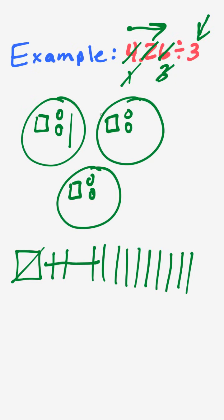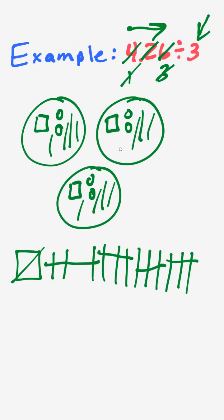Distributing tenths in sets of three: here's three — one, two, three — here are another three — one, two, three — here is another set of three — one, two, three — and just keep doing this until they're all used up. And there you have it.